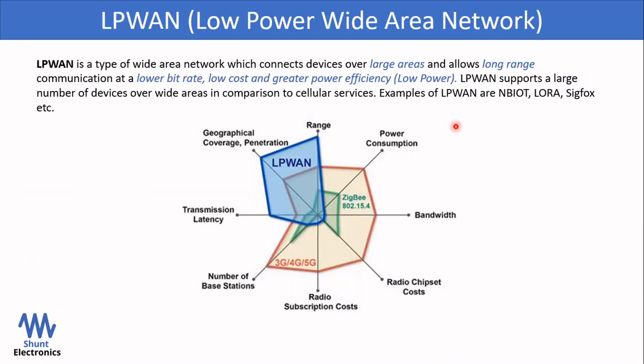NB-IoT is a part of Low Power Wide Area Network, also called LPWAN. LPWAN is a type of wide area network which connects devices over large areas and allows long-range communication at a low bit rate, low cost, and greater power efficiency. LPWAN supports a large number of devices over wide areas in comparison to cellular networks. Other networks in LPWAN are LoRa and SIGFOX. Through this diagram you can clearly see the advantage of LPWAN — the range and geographical coverage are quite high.